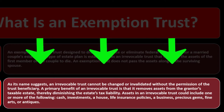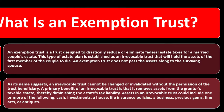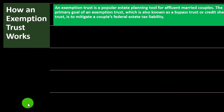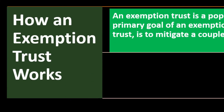A primary benefit of an irrevocable trust is that it removes assets from the grantor's taxable estate, thereby diminishing the estate's tax liability. Assets in an irrevocable trust could include one or more of the following: cash, investments, a house, life insurance policies, a business, precious gems, fine arts, or antiques — any kind of valuables in general.